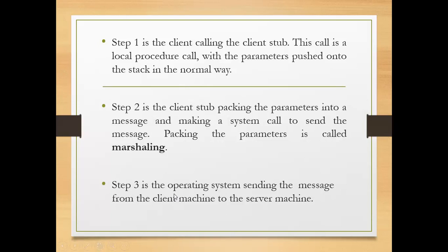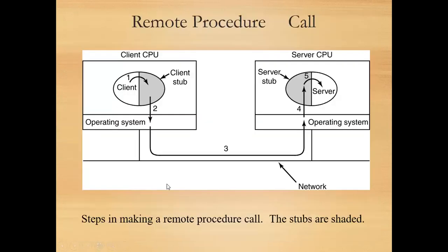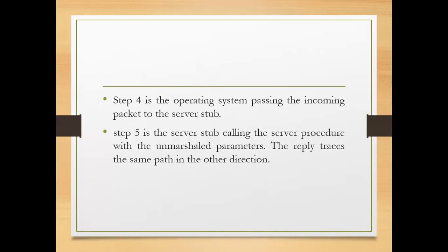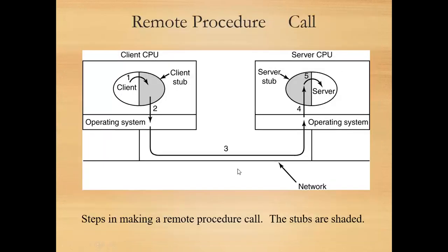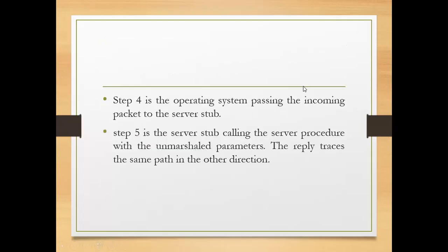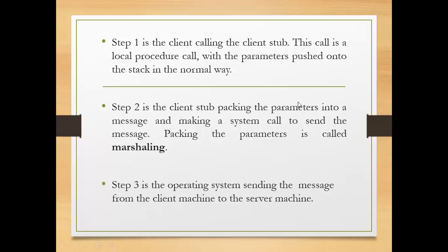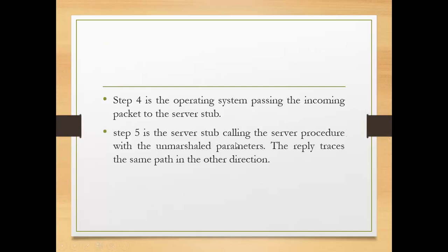Step three: the operating system sends the message from the client machine to the server machine. Then the operating system passes the incoming packet to the server stub. Next, the server stub calls the server procedure. When packing the parameters in a message is called marshaling, we will unpack which is done by the server stub.